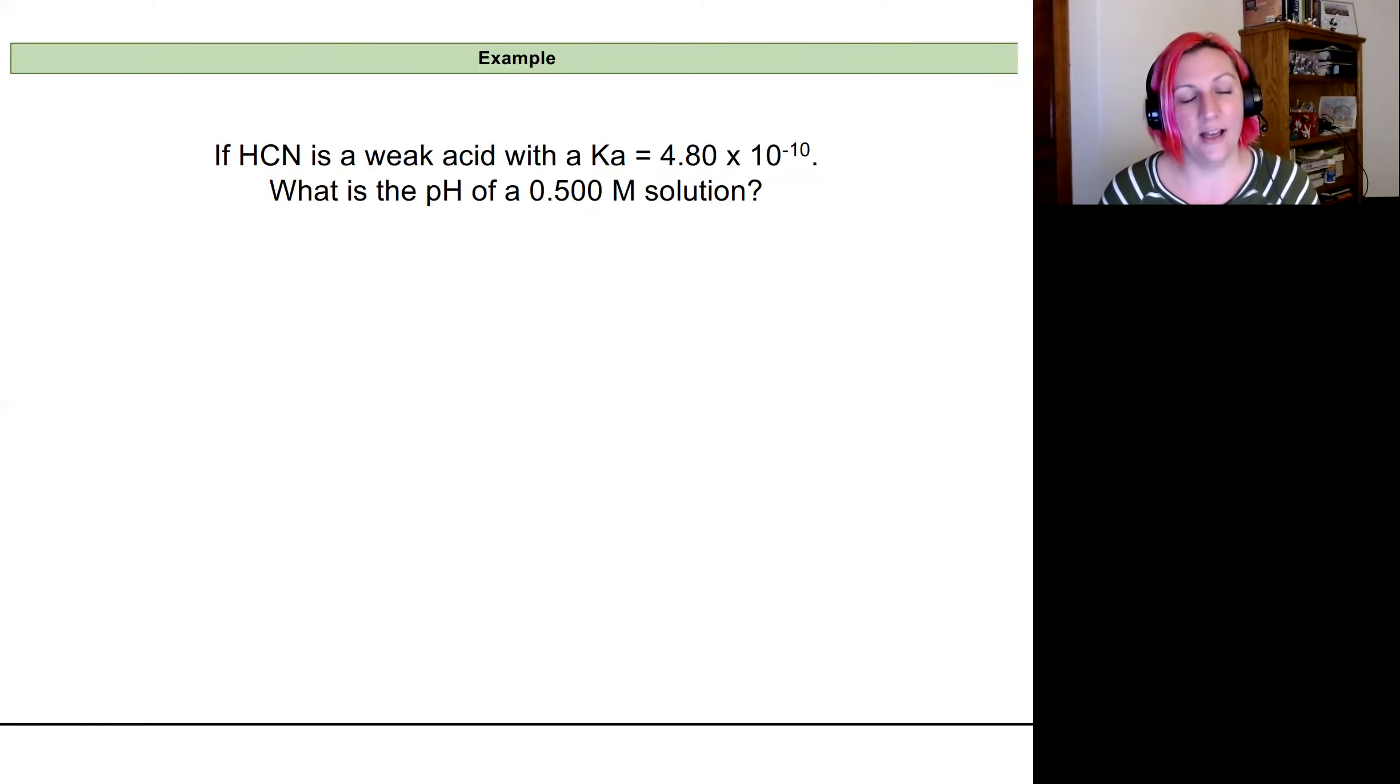All right. So we're going to look at hydrocyanic acid. Once again, I've got the Ka value here, 4.8 times 10 to the negative 10. And we want to know what is the pH of a 0.5 molar solution. And so this right here is our initial concentration of HCN. So my first step is I'm going to write out my reaction. I have hydrocyanic acid and water in equilibrium with CN minus and H3O plus.